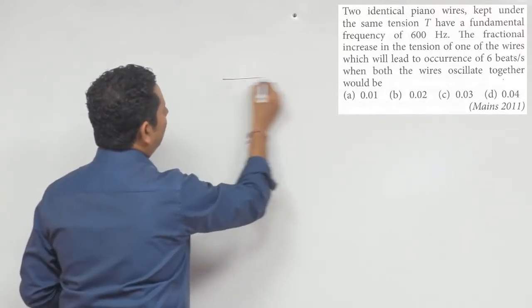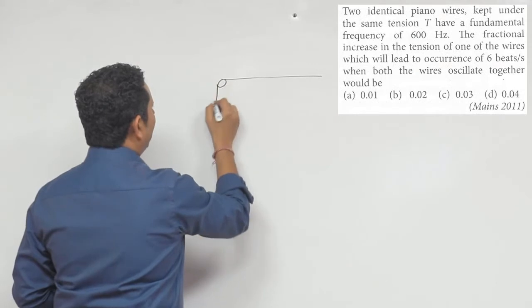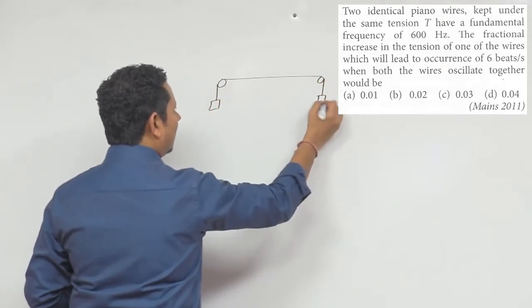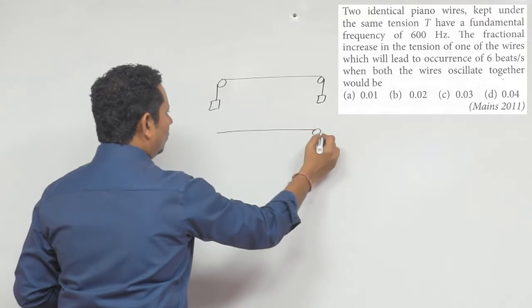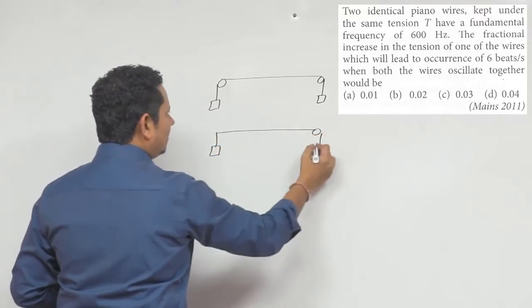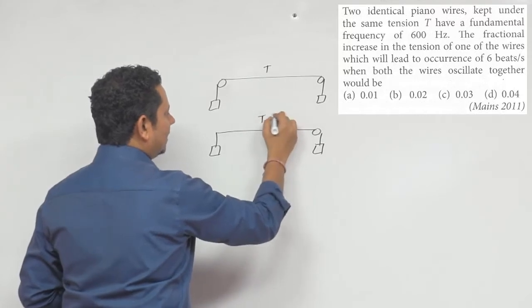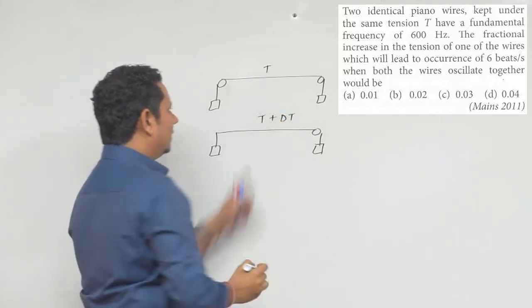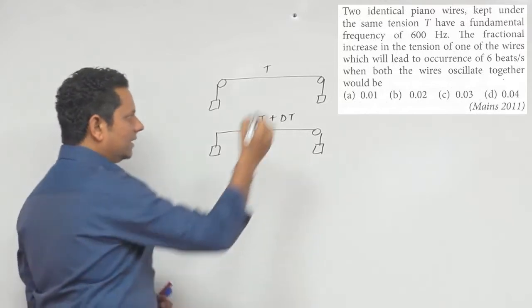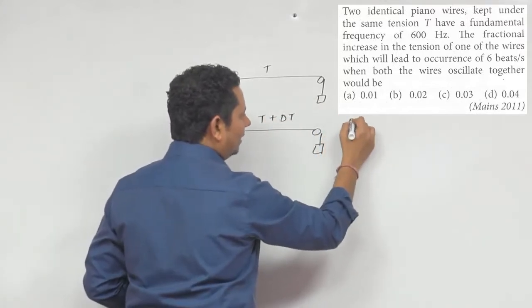Make the wire like this - the first has tension T. In the second case we have T plus delta T. Here we have the tension increase - the fractional increase delta T by T.